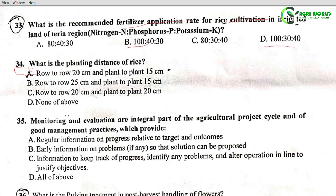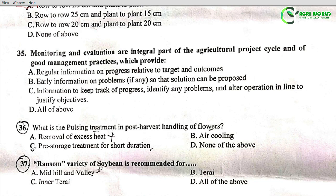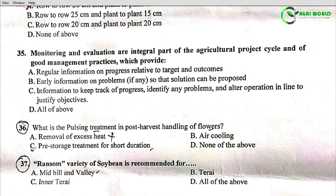Question 35: Monitoring and evaluation are integral parts of the agricultural project cycle and good management practices. They provide regular information on progress relative to targets and outcomes, early information on problems so that solutions can be proposed, and information to keep track of progress, identify problems, and alter operations in line with objectives. The correct answer is Option D: all of the above.